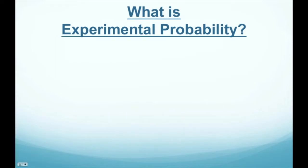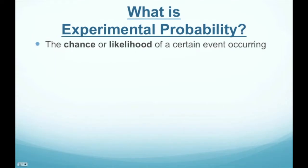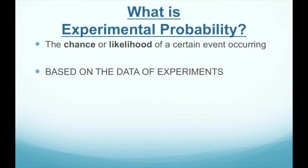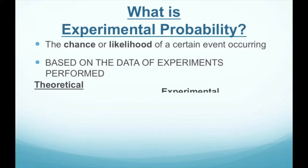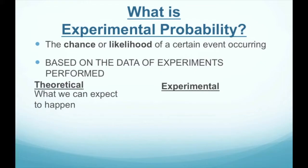So what exactly is experimental probability? Well, it's still the chance or likelihood of a certain event occurring. However, experimental probability is based on the data of experiments performed. Theoretical probability tells us what we can expect to happen based on facts. Experimental probability tells us what actually happened from performing certain experiments.